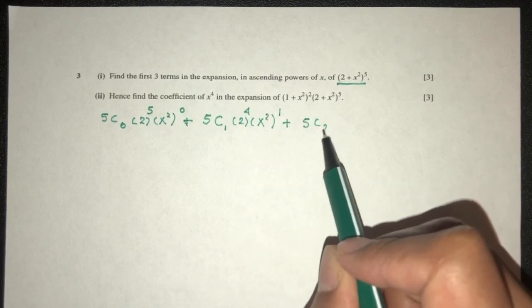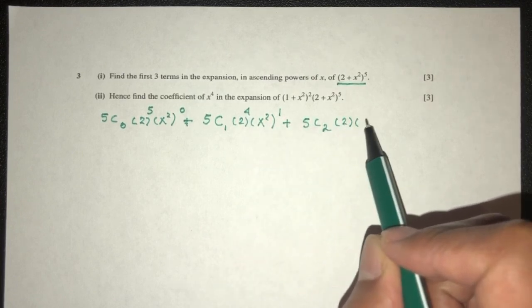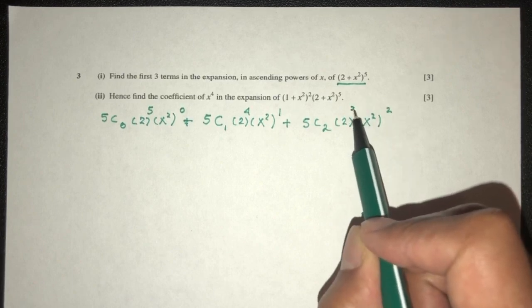And then the third term, that will be 2 here, and x squared, that will be square, and then that will be 3 over here.